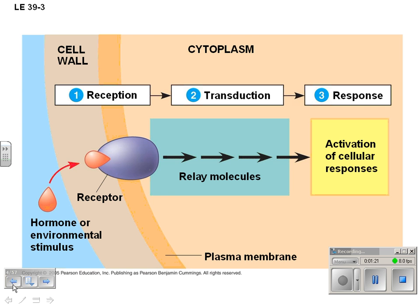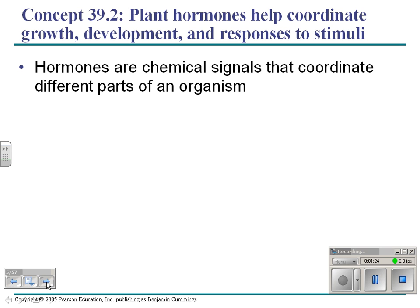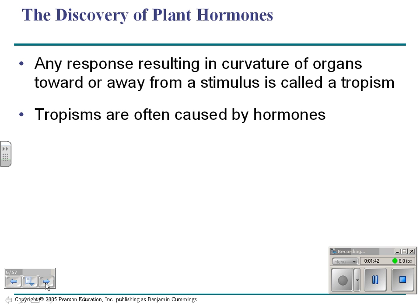This is a review from chapter 11. The things that help coordinate this are plant hormones. We're going to look at one plant hormone specifically and gloss over a few others. Hormones are chemical signals that coordinate different parts of an organism and can come from many different places. A tropism is a plant's response towards or away from a stimulus, and we're going to look at tropisms in class.